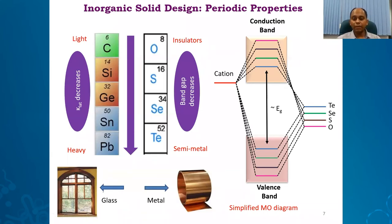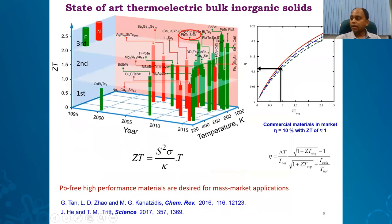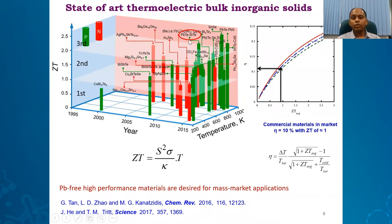It is better to make new materials with elements further down the periodic table where both glass-like and metal-like properties converge — and you will see that the compounds we synthesize always have heavy-metal-based chalcogenides. Looking at the ZT versus temperature curve, there are three generations of materials: first generation with ZT of 1, second generation with ZT of 2, and third generation materials discovered after 2012 with ZT between 2 and 2.5. However, most of these materials contain lead — lead telluride, lead sulfide — so the third grand challenge is to make highly efficient lead-free materials for mass market application.